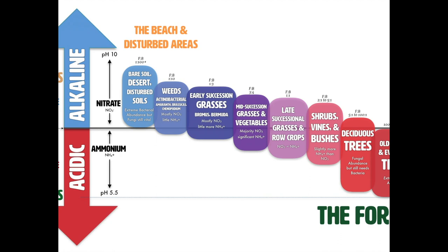We're going to look at the exceptions. This main chart is cold temperate — North America, Europe — representing most climates. But there are exceptional climates like Madagascar, parts of Africa, the South Pacific islands, and areas near extreme geological phenomena. There are extreme soils. If you don't see yourself here, you might be there and we'll get there. Just stick with us because all of this really matters.